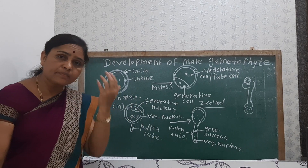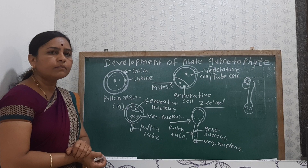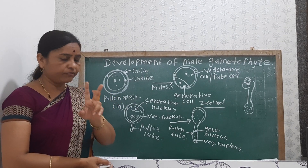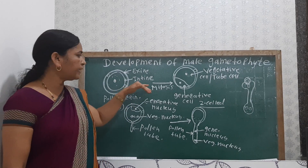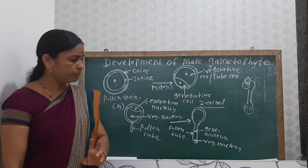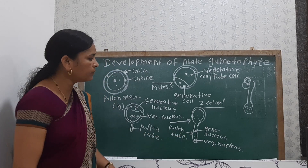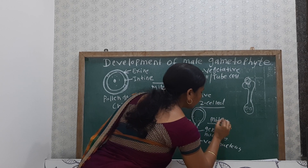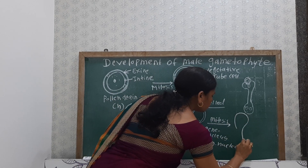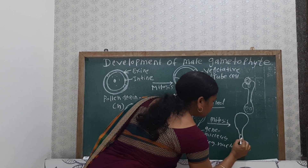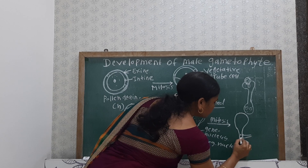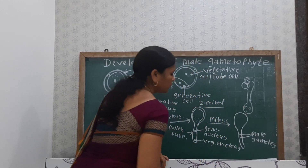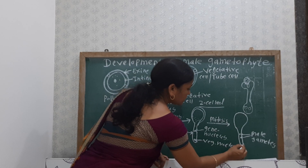This generative nucleus again divides by mitosis. In the development of the male gametophyte, mitosis takes place two times: first when the single nucleus of the pollen grain divides by mitosis producing the two-celled structure, and again when the generative nucleus divides by mitosis. In the pollen tube, there is the formation of two male gametes. The vegetative nucleus or tube nucleus then degenerates or disappears.